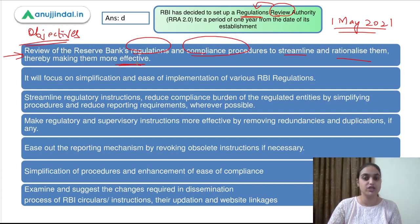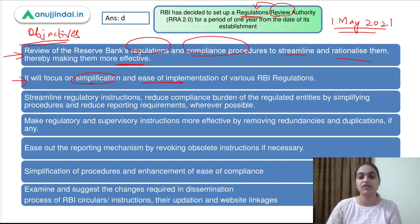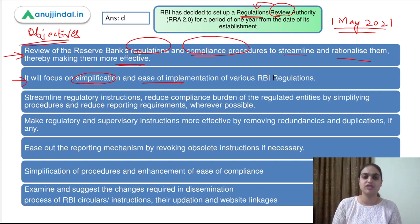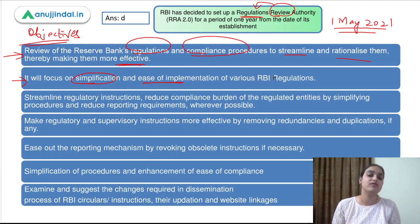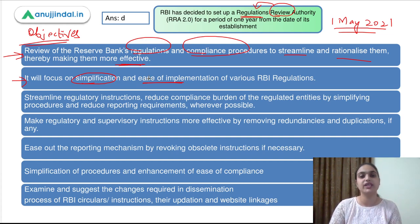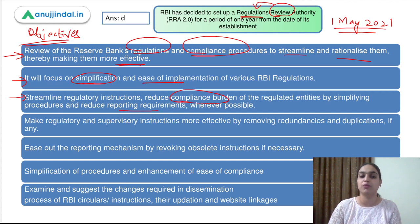We have to focus on making the existing regulations more effective, because of which a review is needed. Secondly, the focus will be on simplifying things, on making sure that the implementation of various RBI regulations eases out. We have to make sure that somehow we can simplify these regulations. When the regulations are easy to implement, then larger masses of society will be able to implement them. If the regulations are simple and easier for banks to understand, they can obviously easily implement them. Streamlining the regulatory instructions and reducing the compliance burden will help simplify procedures and reduce reporting requirements wherever possible.